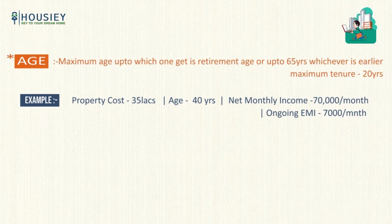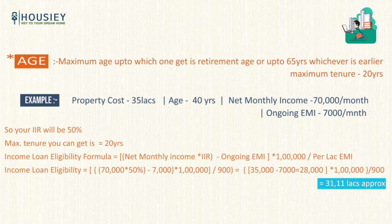Let's consider an example: property cost is ₹35 lakhs, age is 40 years, net monthly income is ₹70,000 per month, and ongoing EMI liabilities are ₹7,000 per month. Since income is ₹70,000, IIR will be 50%. Maximum tenure: 65 minus 40 = 25 years, but capped at 20 years. Income Loan Eligibility = (70,000 × 50% − 7,000) / 900 × 1,00,000. From the chart at 9% for 20 years, per lakh EMI is ₹900. So income loan eligibility comes to ₹31.11 lakhs.